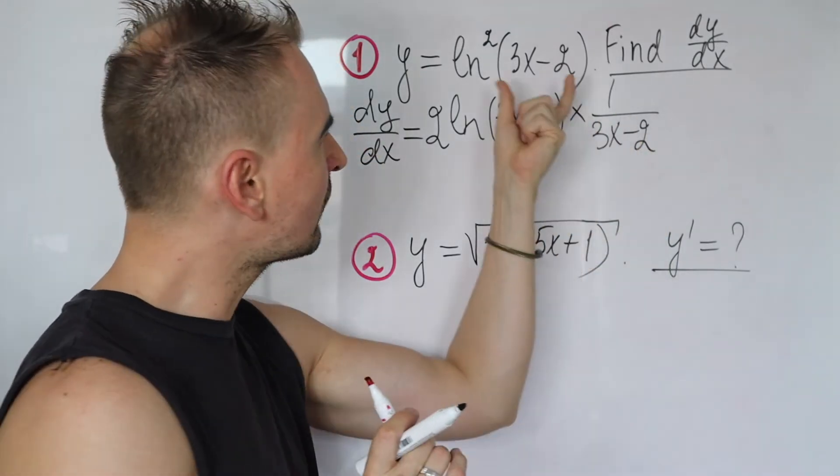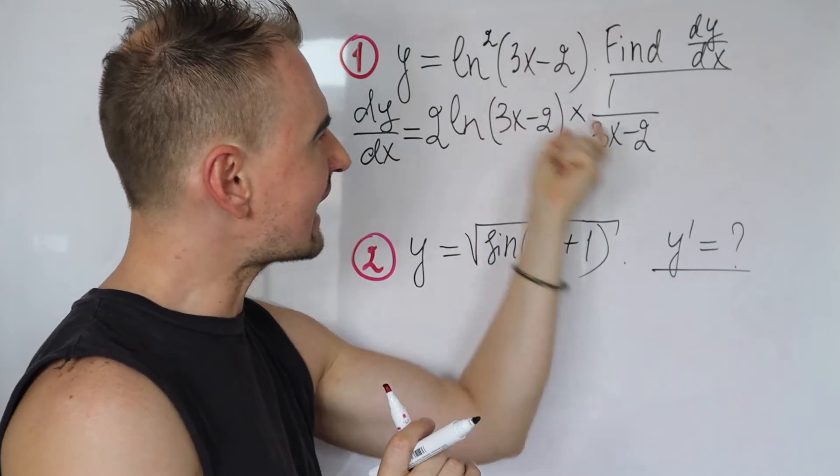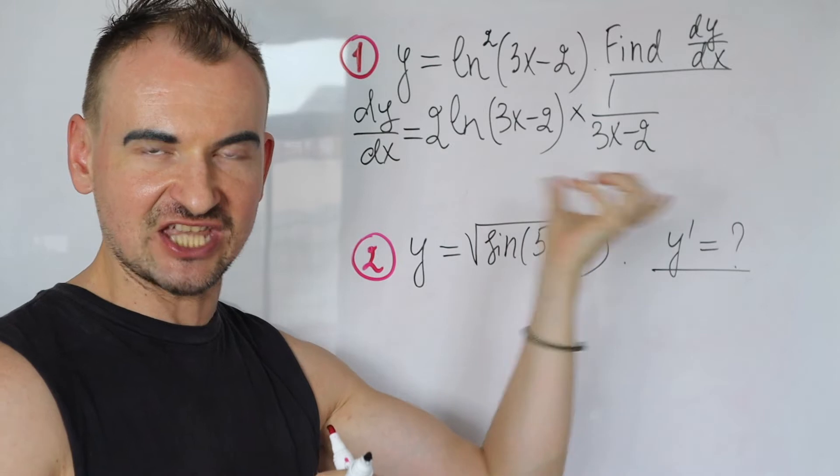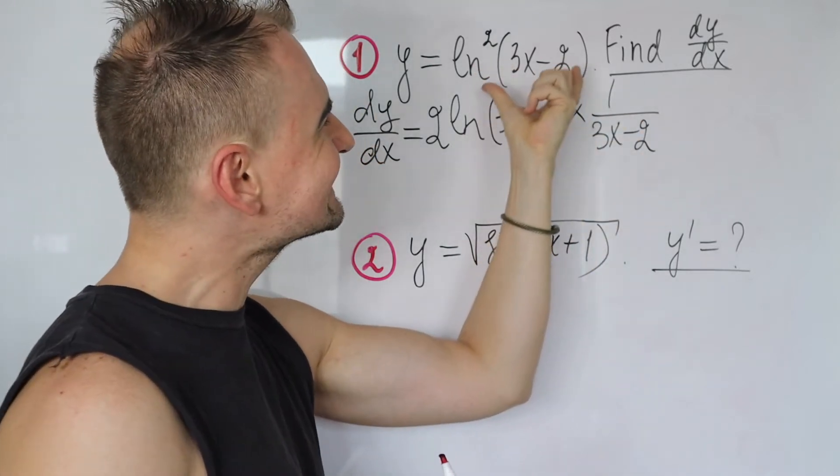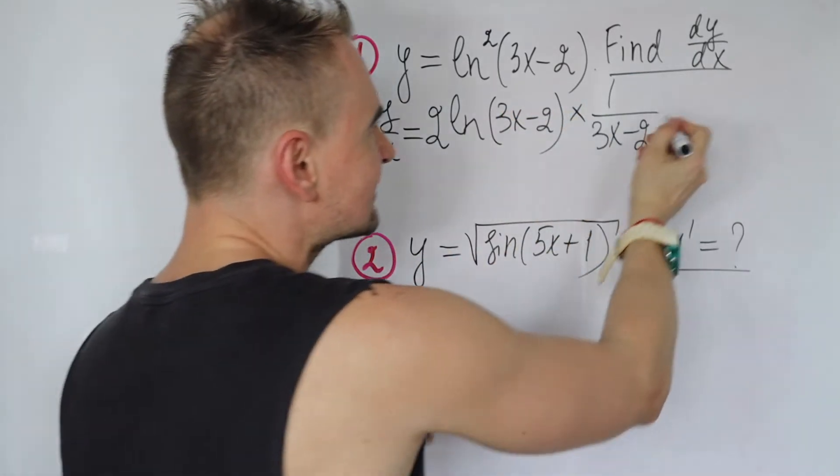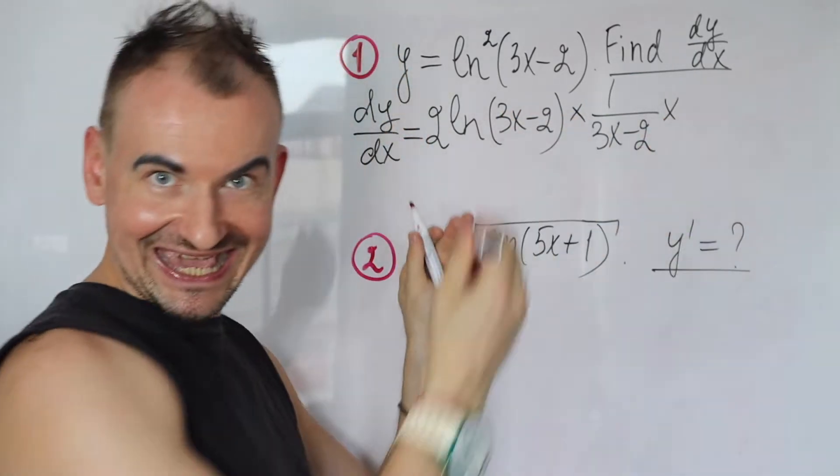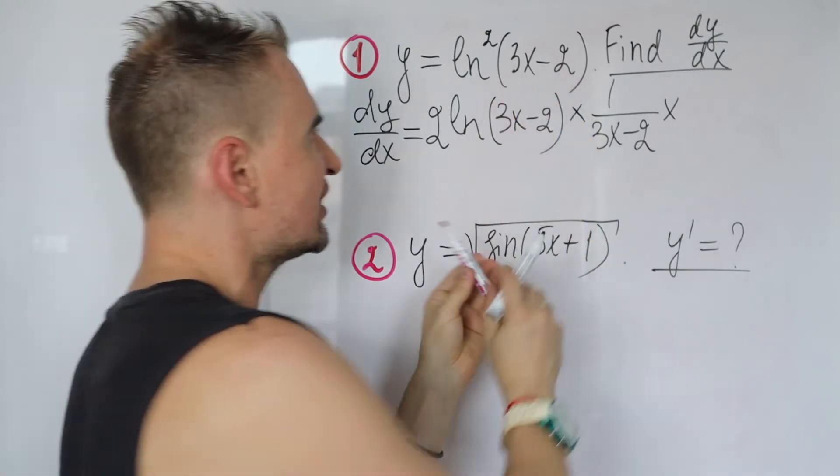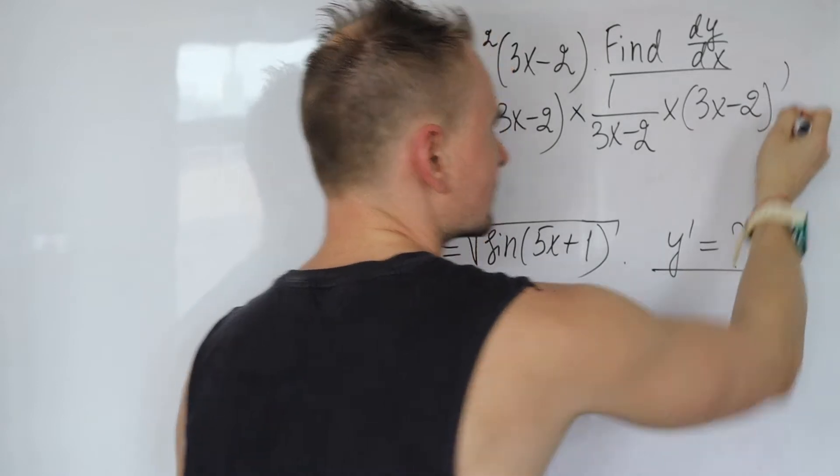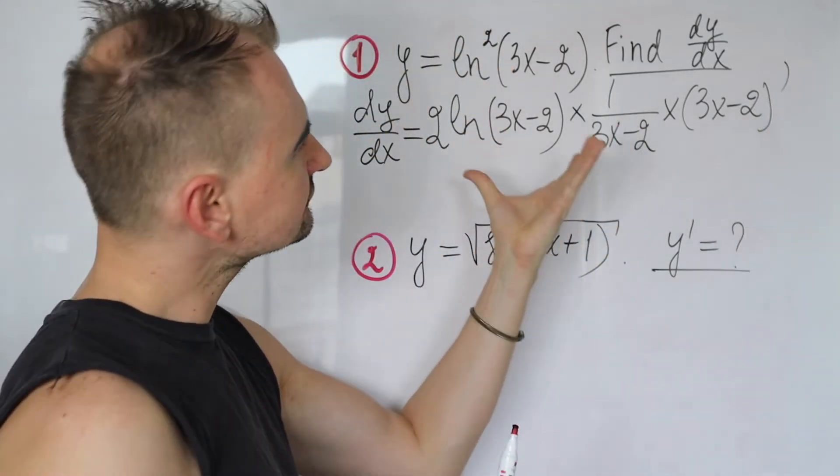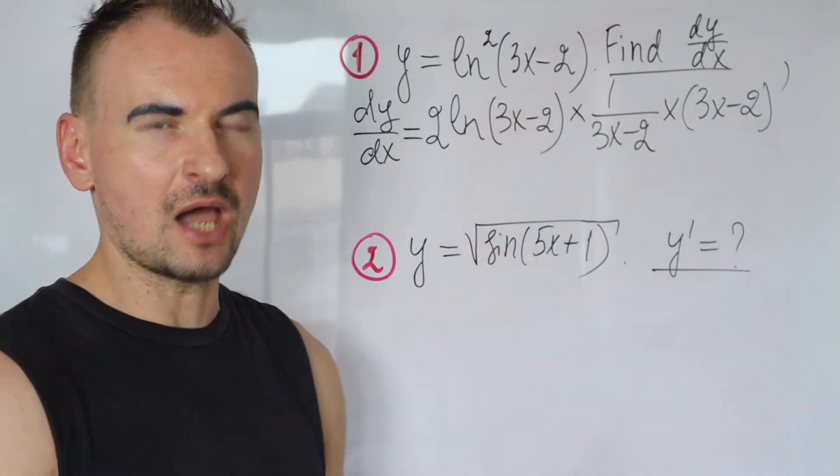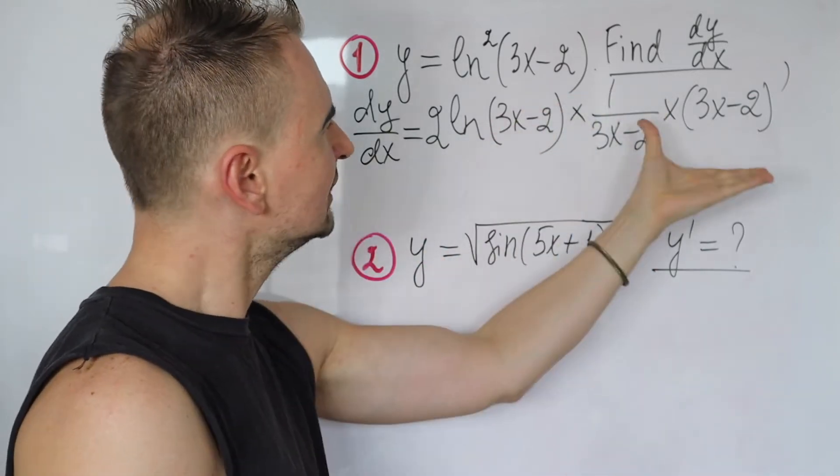And surprise surprise, we are not done yet. Because if it were x we would write one over x and we are done at this point. But because you have this linear 3x minus 2 inside, this term gets multiplied by the derivative of 3x minus 2. This is kind of double chain rule if you like.